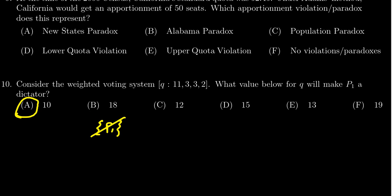And that's the truth for all the other ones. To be a dictator, the quota needs to be less than or equal to the number of votes that player has. And so 10 is the only one that does that. So that's why the other ones can get ruled out from consideration if you're looking for a dictator.